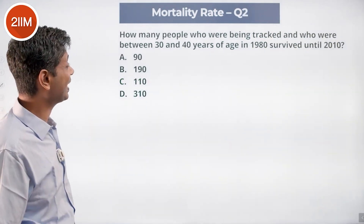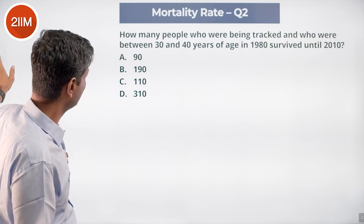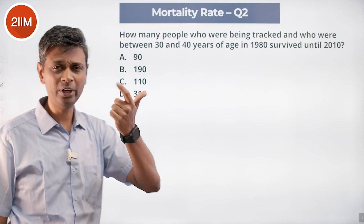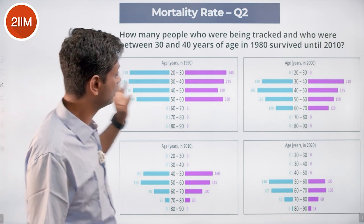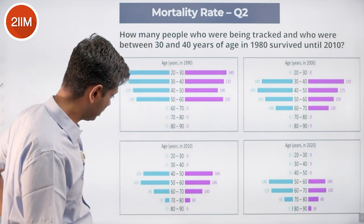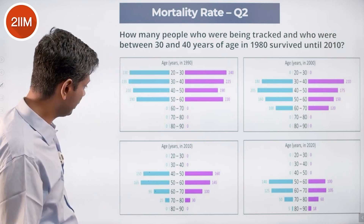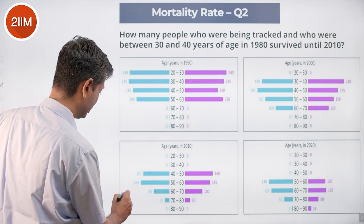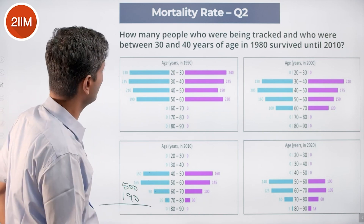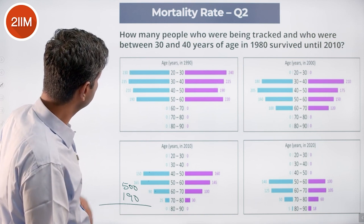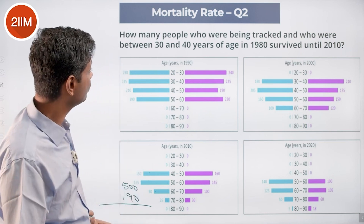How many people who were being tracked and were between 30 and 40 years of age in 1980 survived till 2010? In 1980, the age groups are 10 to 20, 20 to 30, 30 to 40 — that's the third bucket. And who survived till 2010? In 2010, the third bucket — 190 have survived out of 500. Just want to check: 10 to 20, 20 to 30, 30 to 40 — third bucket survived till 2010.